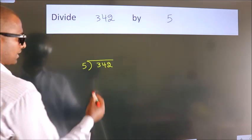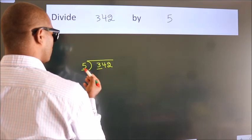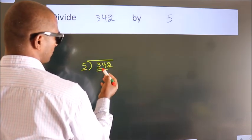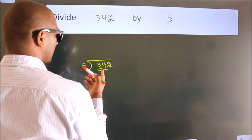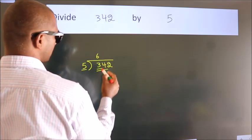Next. Here we have 3. Here 5. 3 is smaller than 5, so we should take 2 numbers. 34. A number close to 34 in the 5 table is 5 times 6 equals 30.